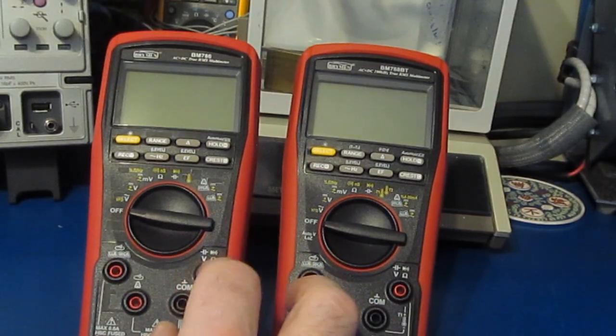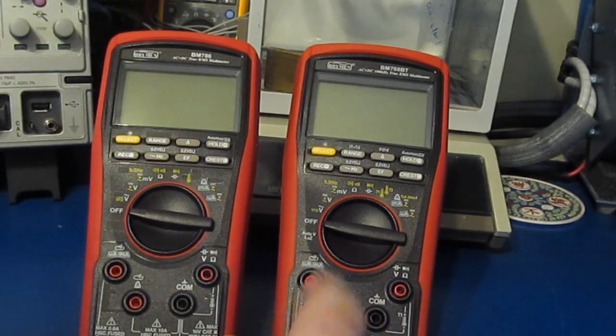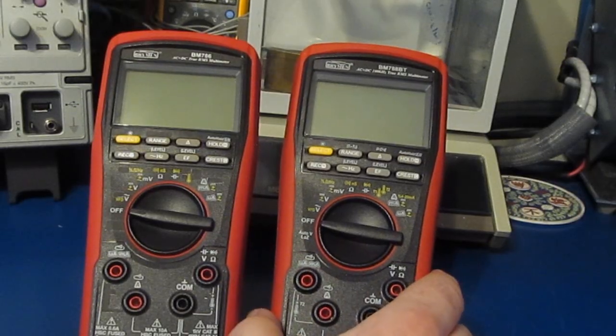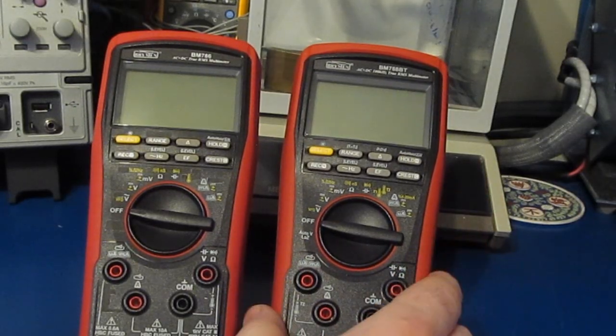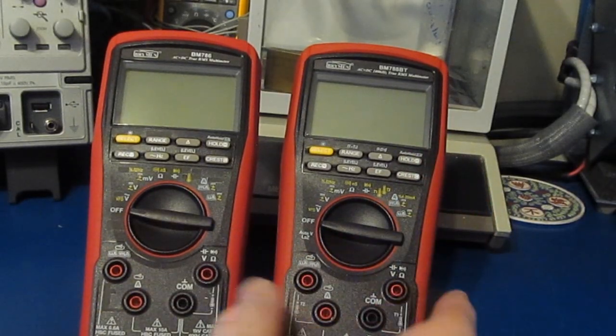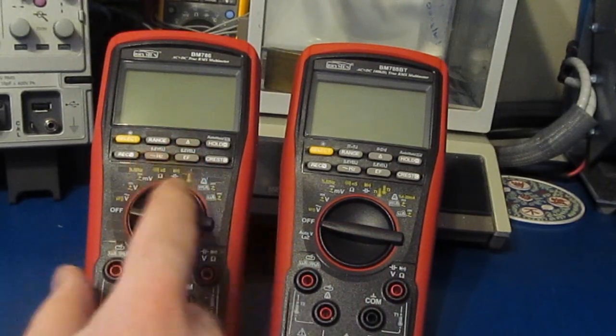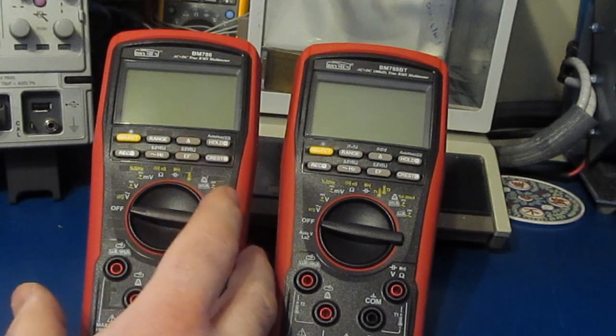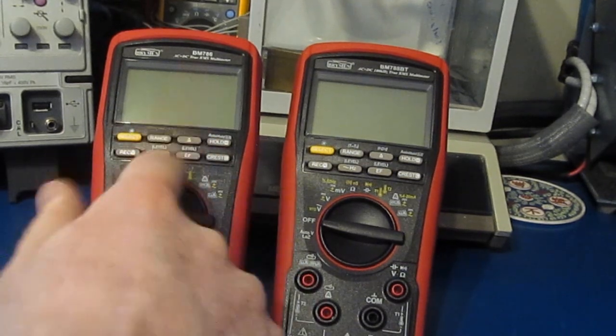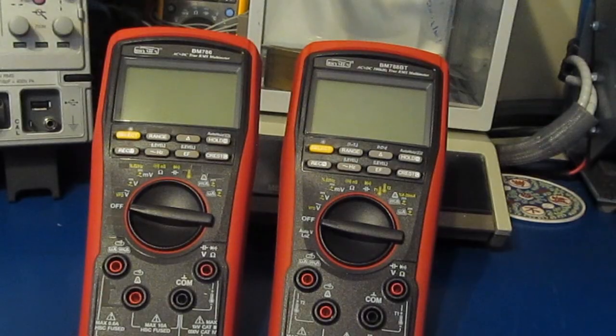Both of these meters were supplied by Brymen, so I want to be clear you cannot purchase this meter as of today, but I understand it's fairly close. Now Dave Jones on EV blog was also offered a Brymen BM 787, it'll be a custom meter for him. It's very similar to the BM 786.